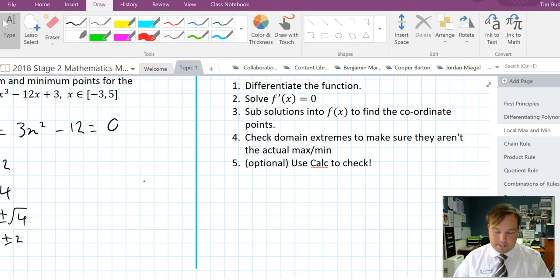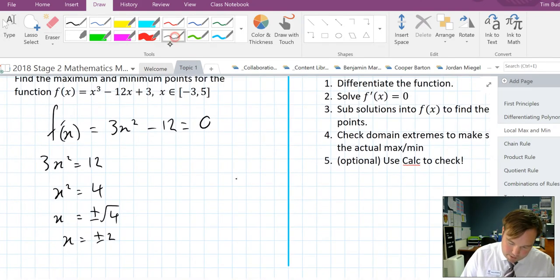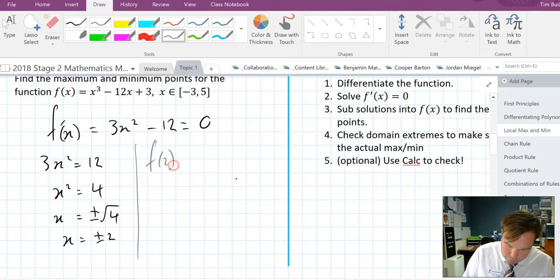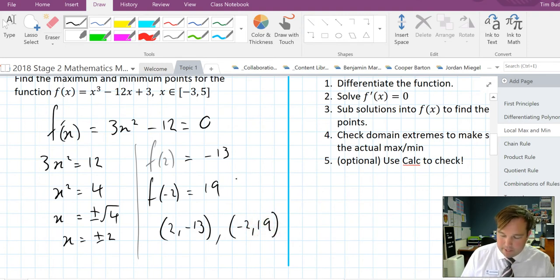To find the actual turning points we need to substitute them back into the equation. So to sub back in, we can find f of 2, and f of 2 we know equals minus 13. And f of minus 2 from the calculator is positive 19. I'm sure you're quite comfortable with sub-function notation and substituting into the equation. Which means our maximum minimum points are 2 minus 13 local min, minus 2 positive 19 local maximum. Or are they?